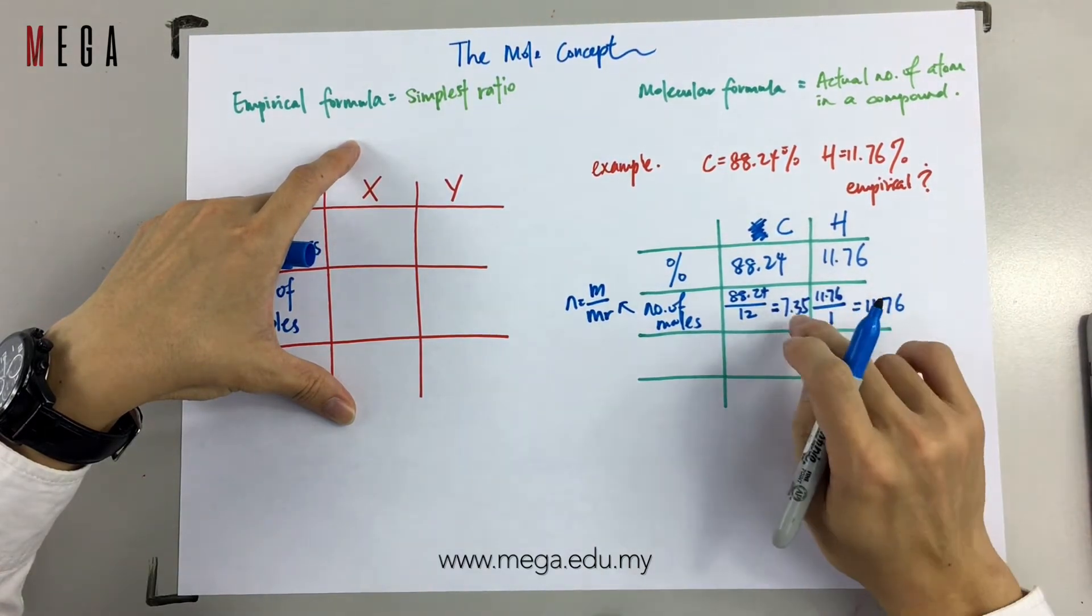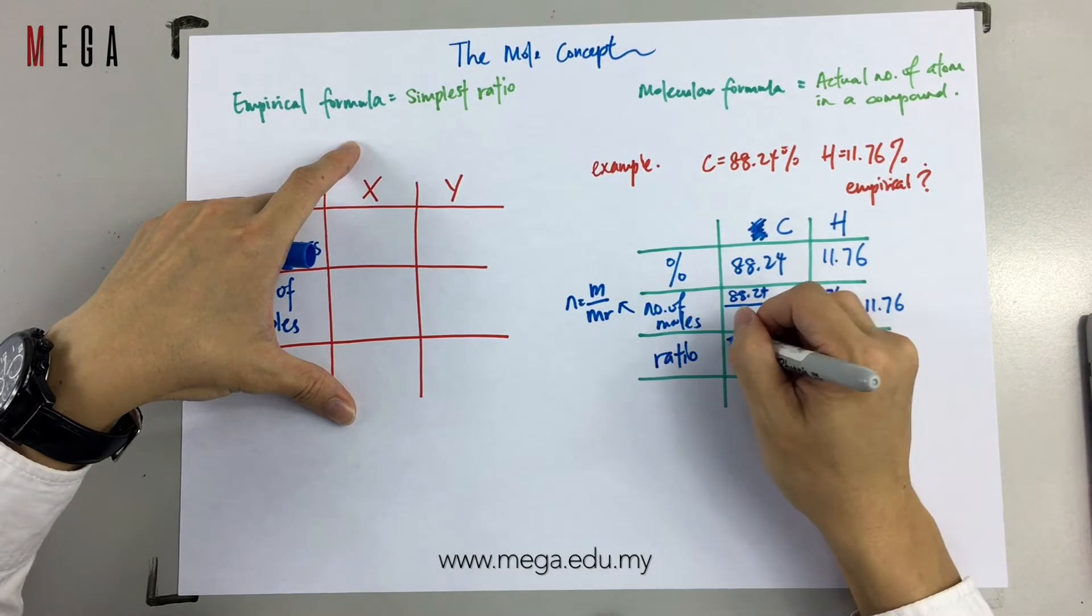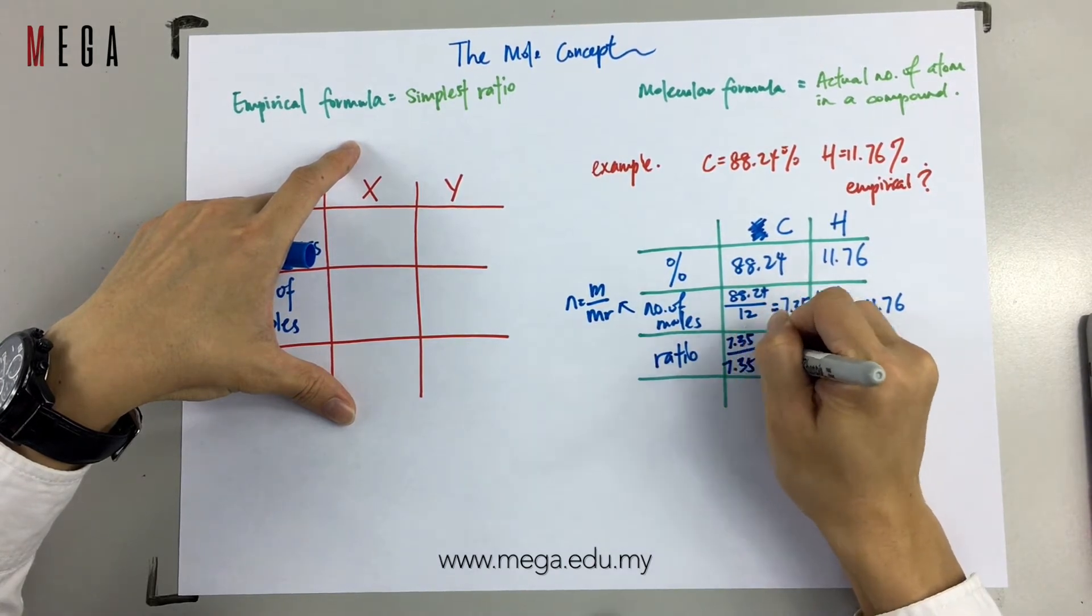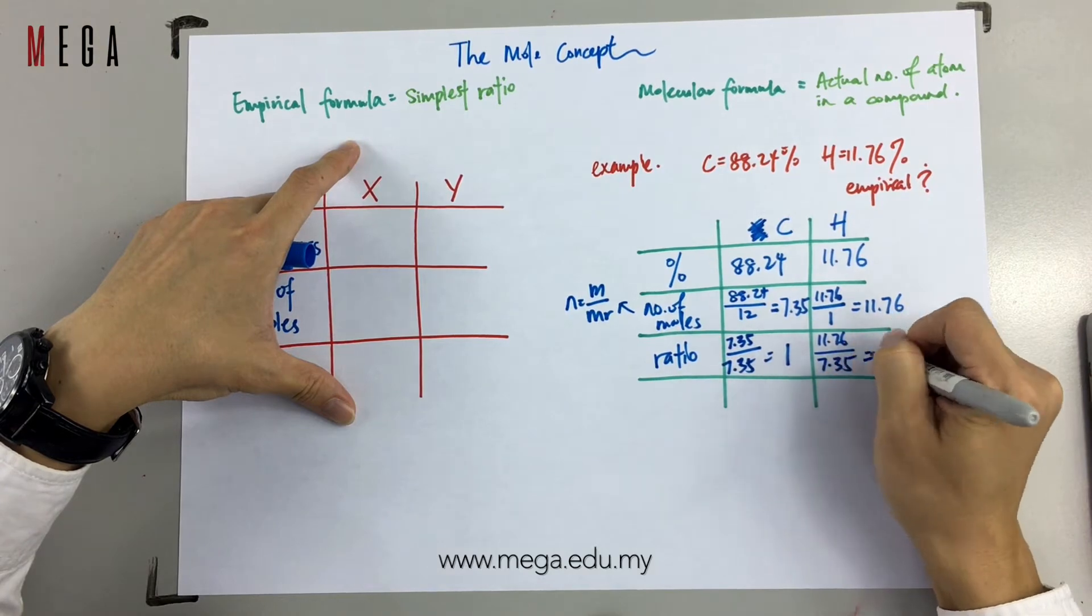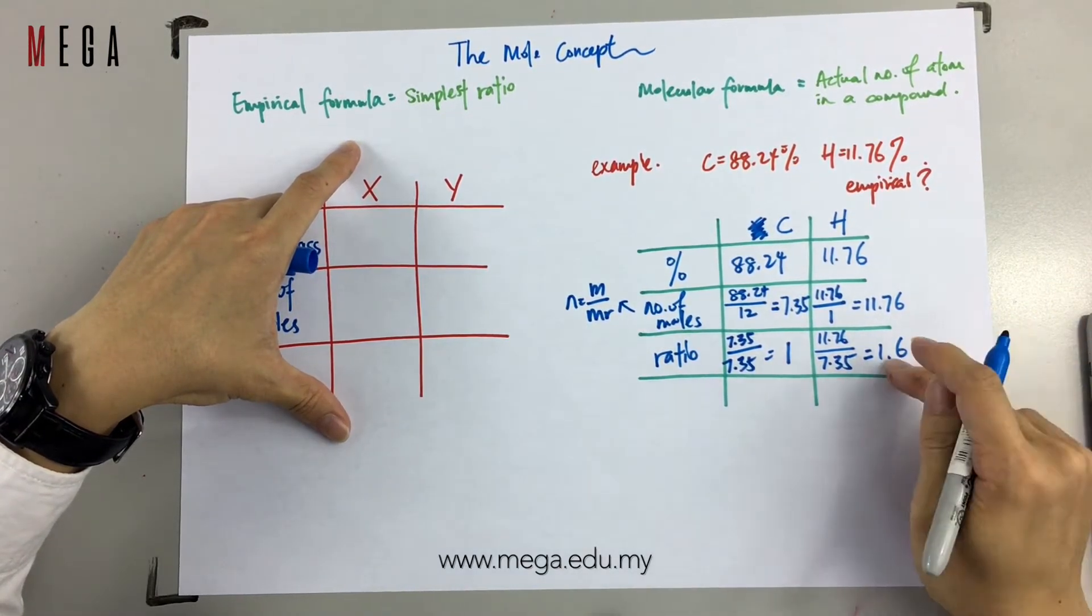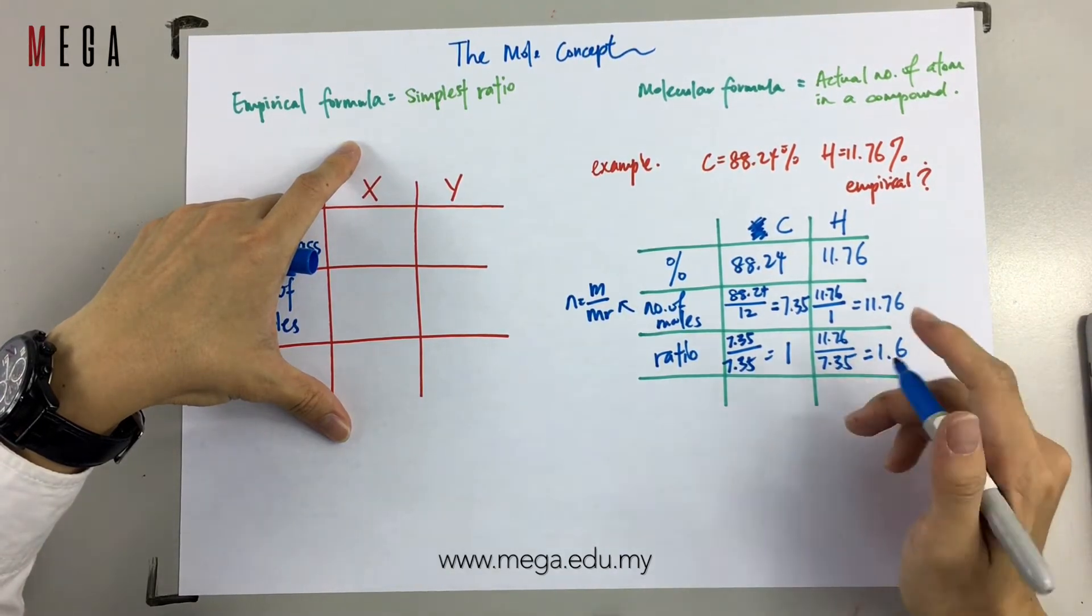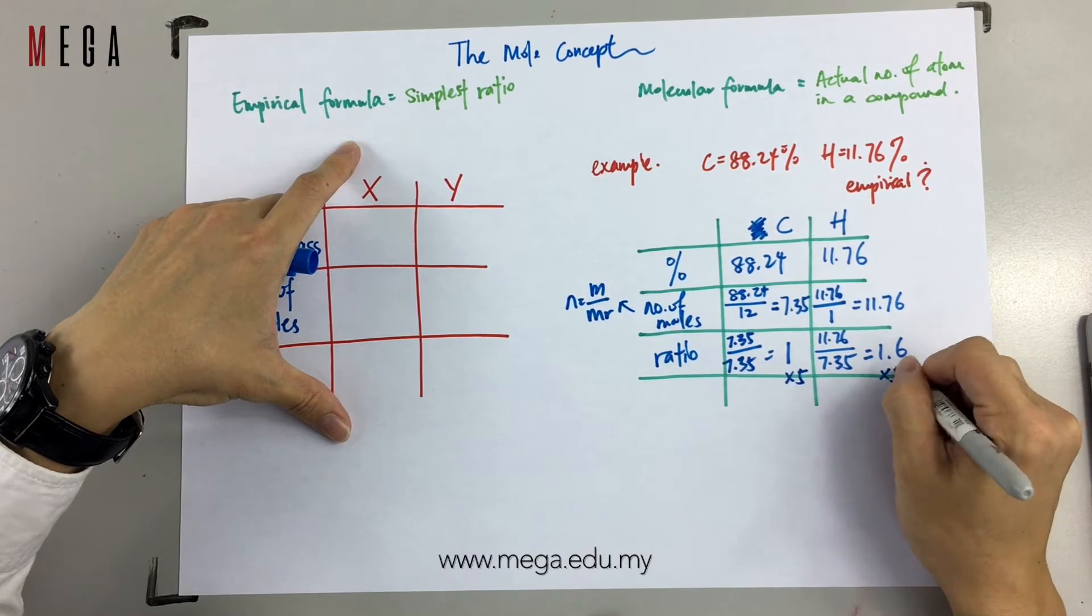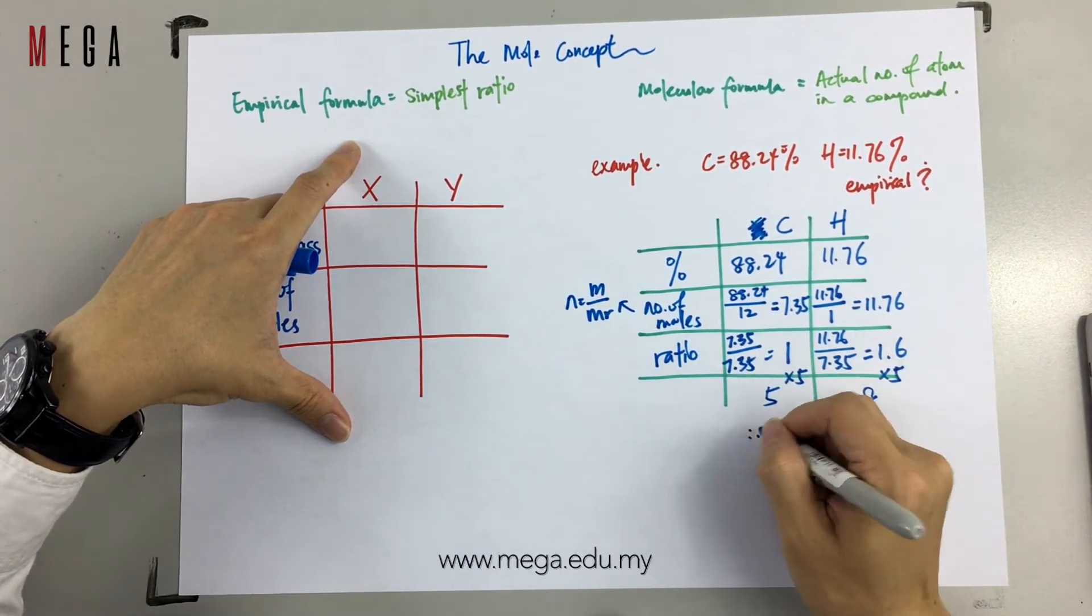Next, look for the ratios. We use the smallest number. In this case, 7.35 is the smaller number, so both numbers of moles divided by 7.35. The ratio you get is 1 to 1.6. But the ratio must be in whole numbers. How can you make it into a whole number? Multiply by 5. So 1 times 5 gives 5, and 1.6 times 5 gives 8. This is the empirical formula: C5H8.